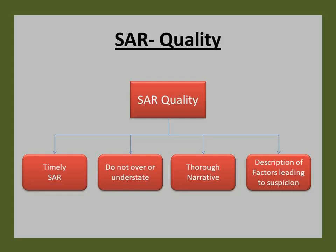A thorough and complete narrative may make the difference in determining whether the described conduct and its possible criminal nature are clearly understood by law enforcement. Because the SAR narrative section is the only area summarizing suspicious activity, the section is critical. A failure to adequately describe the factors making a transaction or activity suspicious undermines the purpose of the SAR. By their nature, SAR narratives are subjective, and examiners generally should not criticize the bank's interpretation of the facts. Nevertheless, banks should ensure that SAR narratives are complete, thoroughly describe the extent and nature of the suspicious activity, and are included within the SAR.